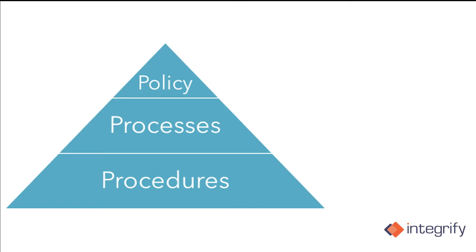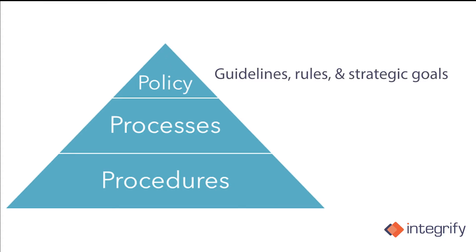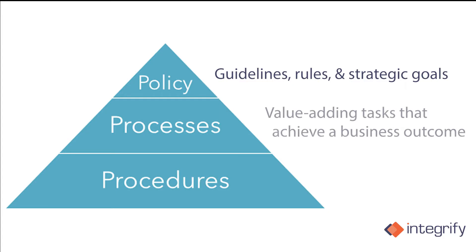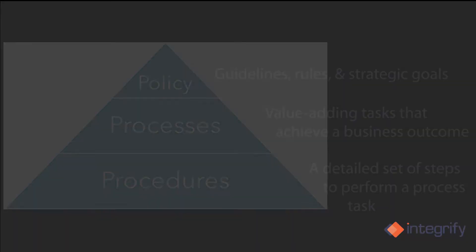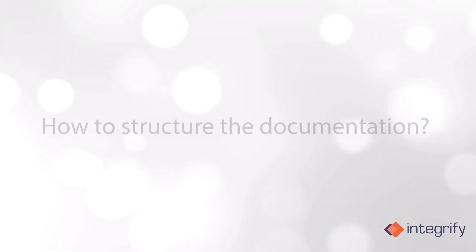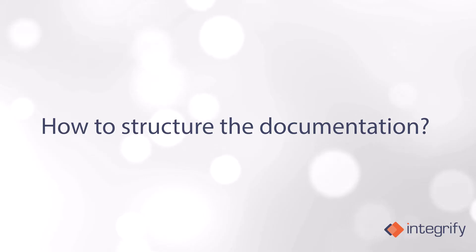Policy covers guidelines, rules, and strategic goals that would typically cover all facets of the organization. Process is a series of interrelated value-adding tasks that achieve business outcomes, and procedure is a detailed set of steps to perform a process task.